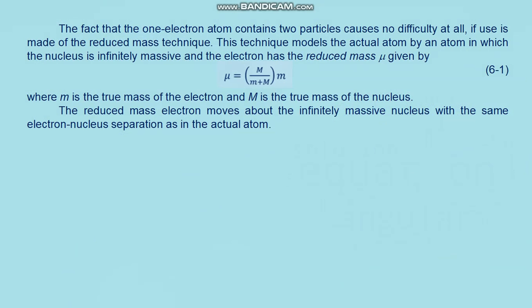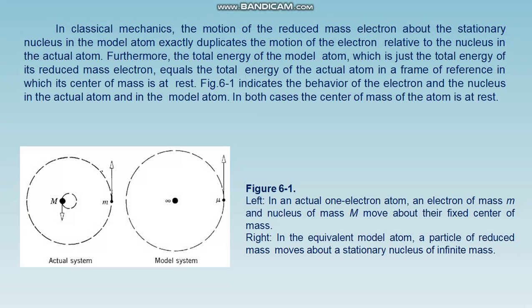The problem is therefore simplified from one involving a pair of moving particles to one involving only a single moving particle. In classical mechanics, the motion of the reduced mass electron about the stationary nucleus in the model atom exactly duplicates the motion of the electron relative to the nucleus in the actual atom. Furthermore, the total energy of the model atom equals the total energy of the actual atom in the frame of reference in which its center of mass is at rest. In both cases, the center of mass of the atom is at rest.